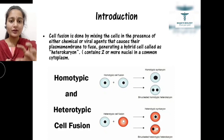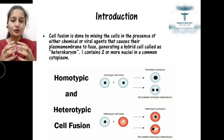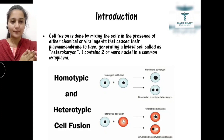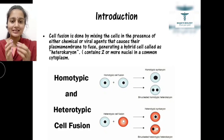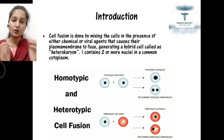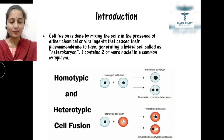The next type is heterotypic cell fusion, where two different cell types are taken. When these two cells are fused in the presence of chemical or viral agents that help fuse the plasma membrane, the resulting hybrid cell may be a heterotypic synkaryon — a cell with a fused nucleus of different origin — or a binucleated heterotypic heterocaryon, which has two different nuclei from different cell types.